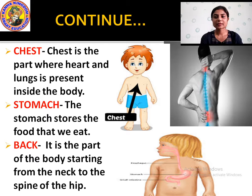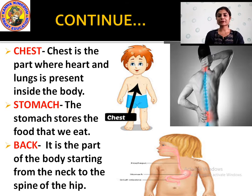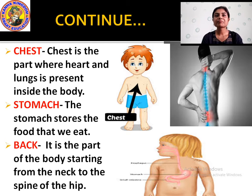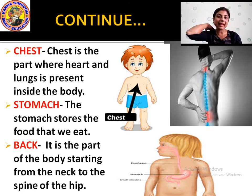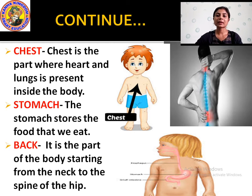The chest is the part where the heart and lungs are present inside the body. Then the stomach stores the food that we eat. Then the back — it is the part of the body starting from the neck to the spine of the hip. The back side of your body is the back.